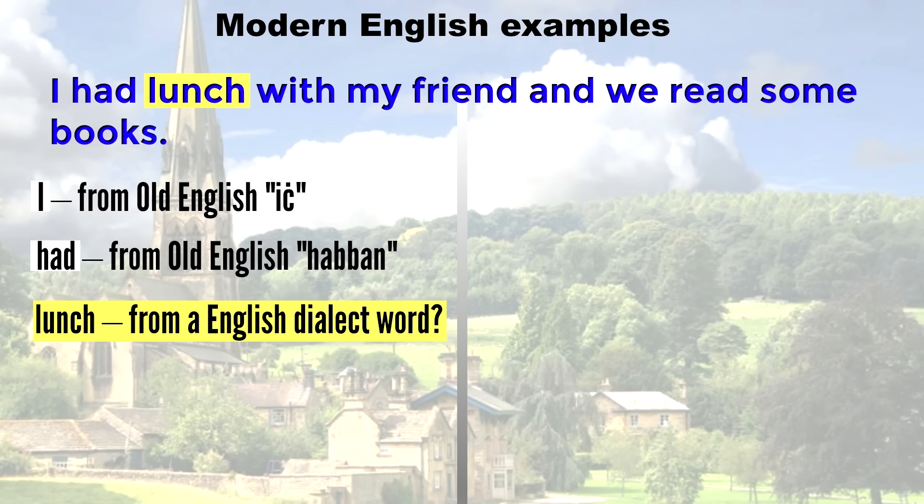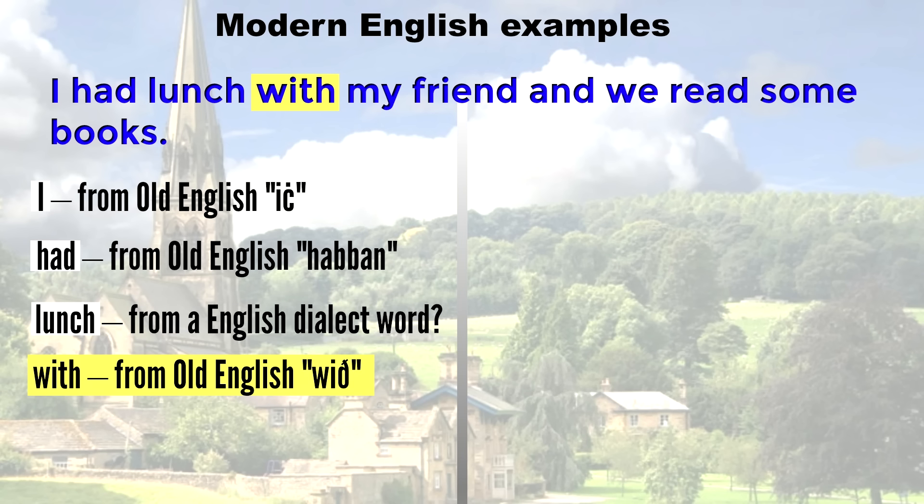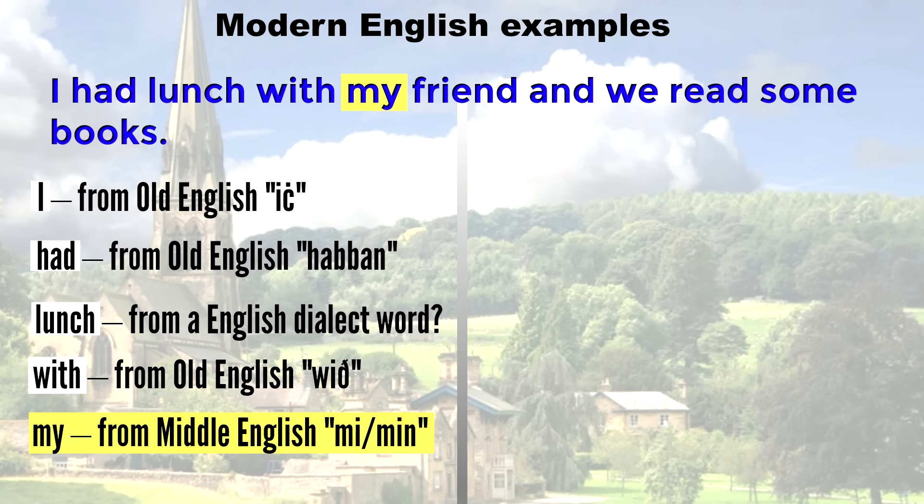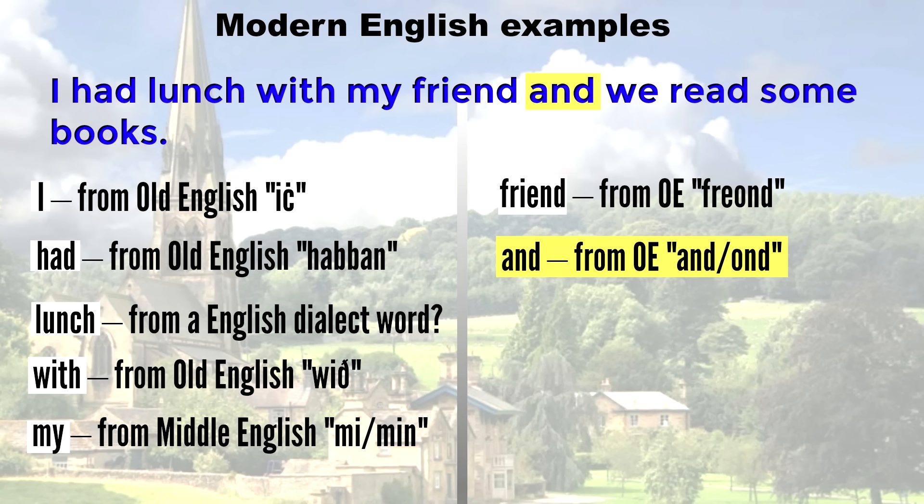Lunch. The origin of this one is vague, but it seems to be from a modern English dialect word. With. This is from Old English with. My. This is Germanic. It comes from Middle English me, or min. Friend. This comes from Old English freond. And. This comes from Old English and, or owned.